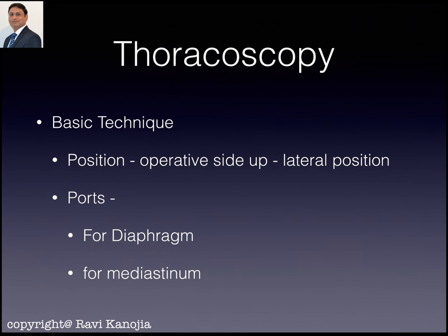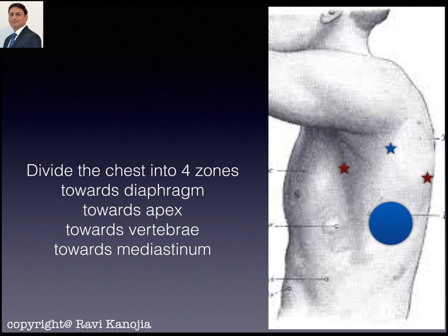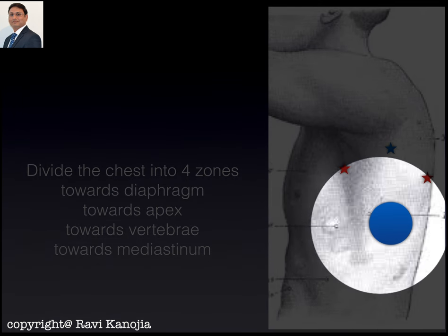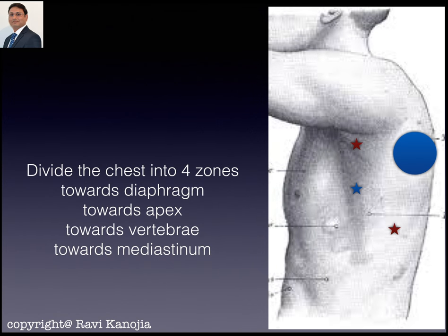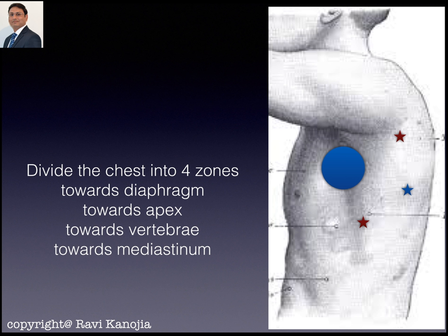For thoracoscopy, the basic idea is to divide the chest into four zones and, based on the zone of interest, place your ports accordingly. If operating on the diaphragm, you triangulate with the same port kite principles into that area. For esophageal procedures the port kite shifts accordingly, and similarly for any mediastinal procedures the port positions rotate to match. The first port is placed by the open method, then all subsequent working ports are placed by the needle finder method — pricking in the intercostal space with a needle and visualizing from inside that the port is coming in correctly.